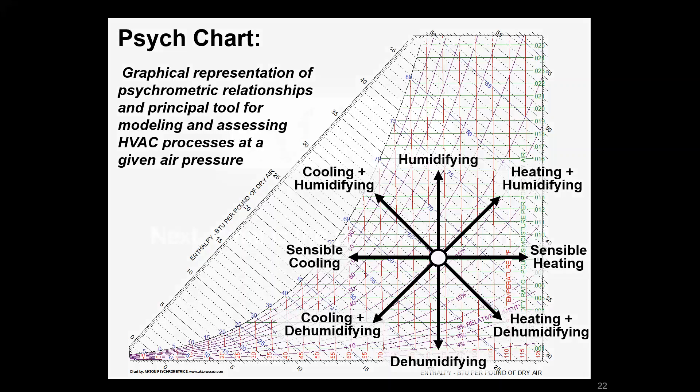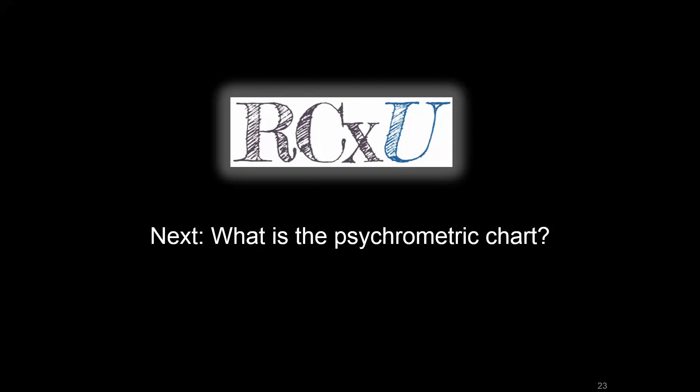So in the next video, we're going to look at how that chart is constructed, what the labels are and what they mean, and then getting into how to plot states on the psych chart so we can start using it to get some numbers and make some assessments. Let's do that.